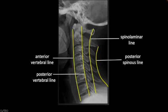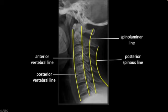When assessing alignment, we look at four lines. There's the anterior vertebral line, drawn across the anterior aspect of the vertebral bodies. There's the posterior vertebral line drawn across the posterior aspect. There's the spinal laminar line drawn across the underside of the spinous processes. And then there's the posterior spinous arc drawn across the posterior tips of the spinous processes. If everything looks like this, it's normal. You can also assess the alignment of the facet joints — the inferior articular processes articulating with the superior articular processes below at every level, stacked up like flying buttresses.